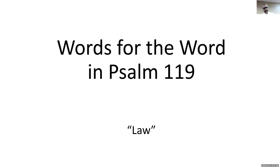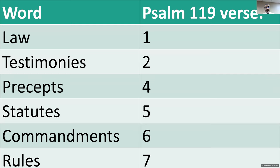There are many different words for the Word of God used in Psalm 119. Starting with the Aleph stanza: the first verse has the word law, the second verse has testimonies, the fourth verse has precepts, the fifth verse has statutes, the sixth verse has commandments, and the seventh verse has rules.